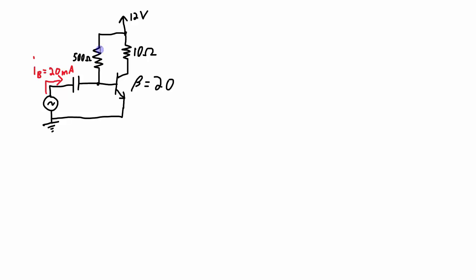This 500 ohm resistor here is for biasing. The transistor we're using has a beta of 20, and the voltage that we're applying to the circuit is 12 volts. Now I want to calculate efficiency.